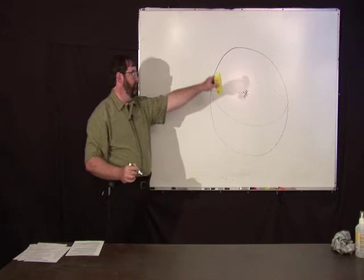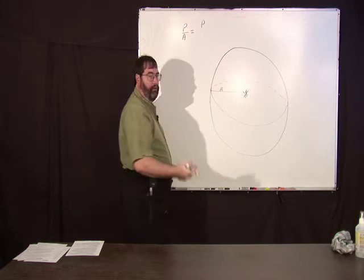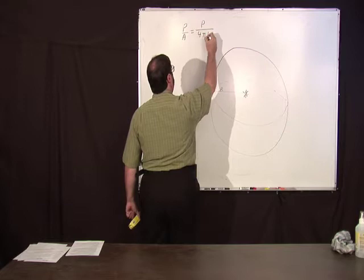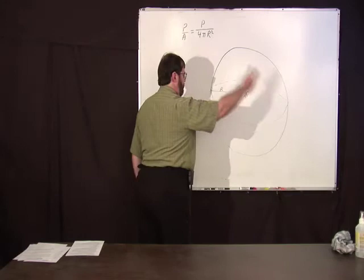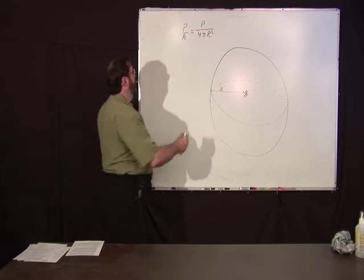that power, you've seen this before, the power per unit area is equal to the power radiated by the star in all directions, total power in watts, divided by 4 pi r squared, the area of the sphere.